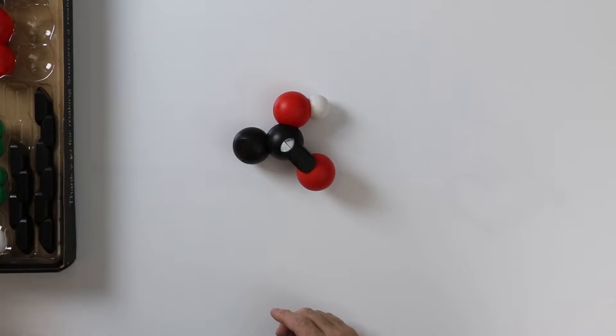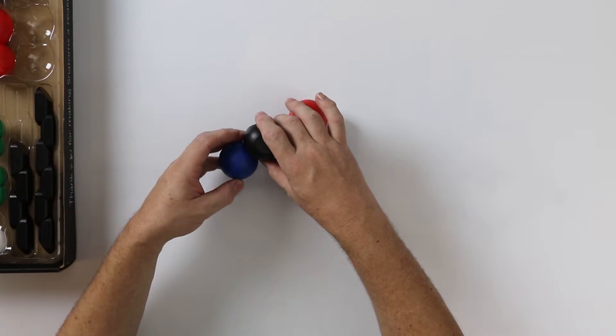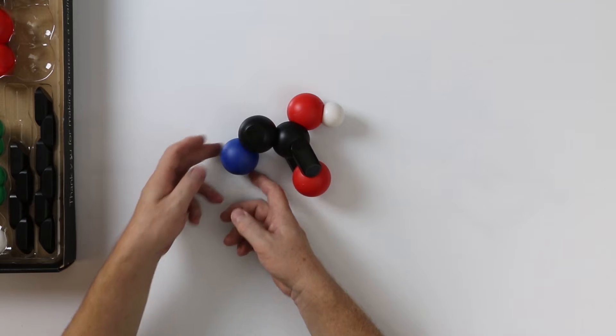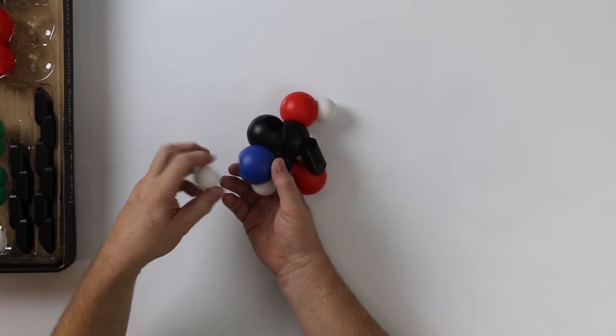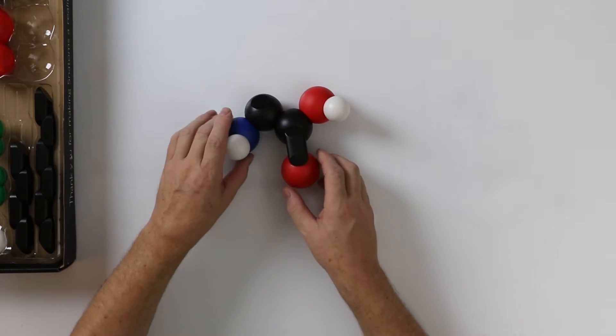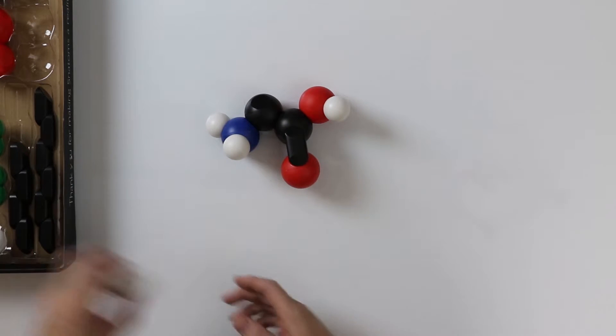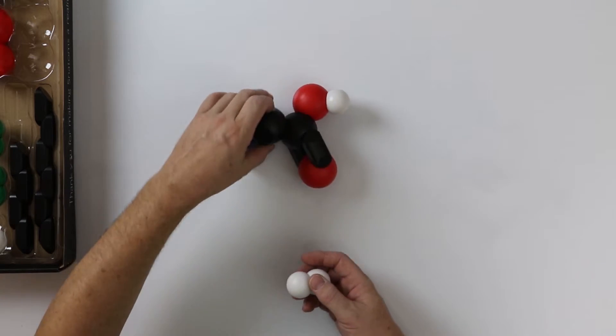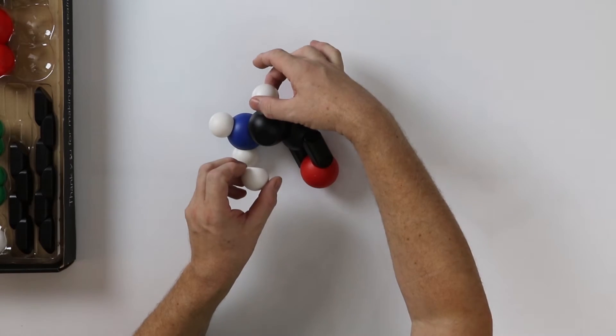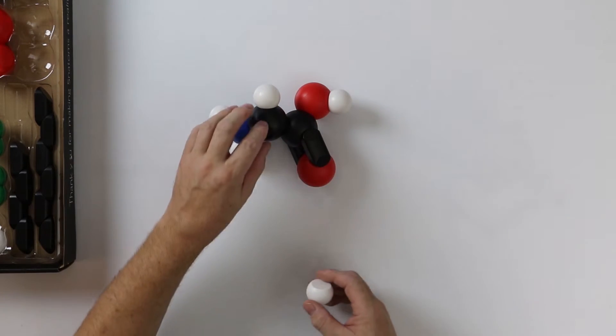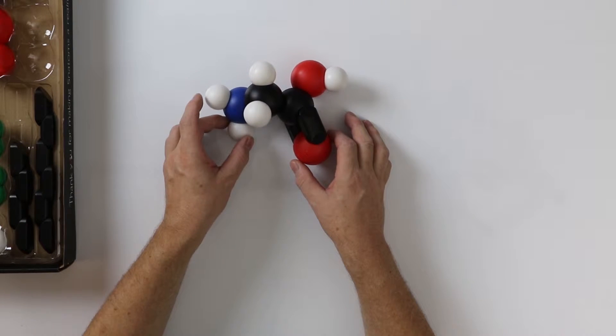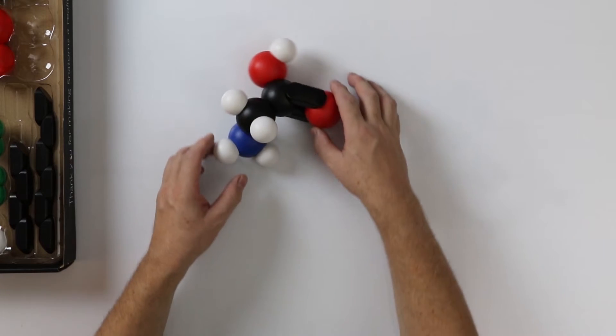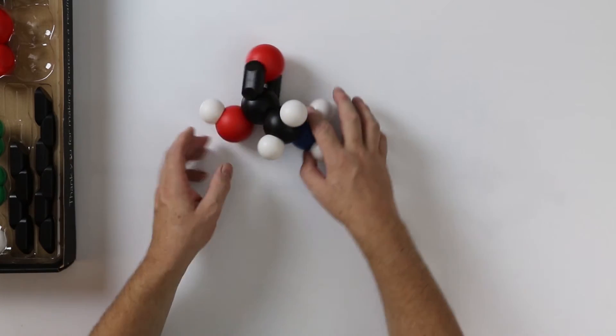At the other end, we have the amine group with nitrogen and its two hydrogen atoms. The other carbon has a hydrogen and another group on it. In this case, we're looking at glycine, the simplest of the amino acids.